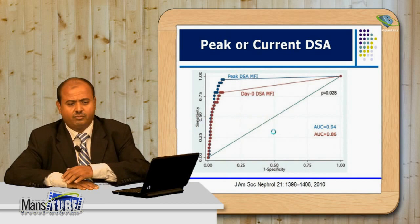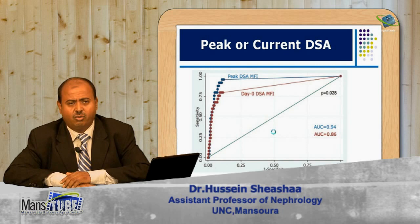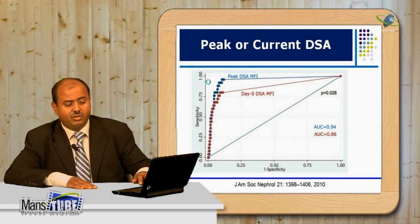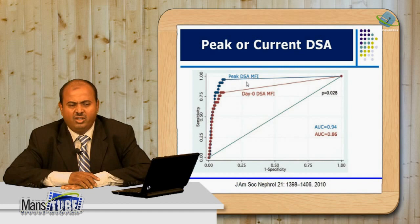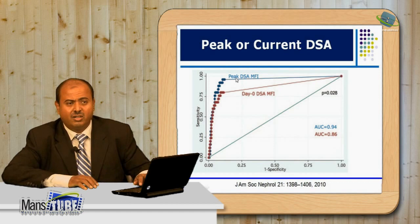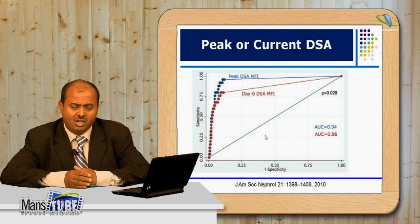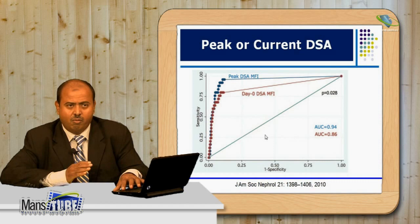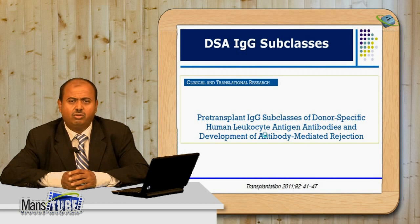An important question: if a patient had DSA at a certain point in the past, is that historical DSA important, or is only the current evaluation relevant? The historical or peak DSA is important because a broad area under the curve indicates the patient is at risk for antibody-mediated rejection. We should respect patient history and monitor DSA serially — peak or historical DSA matters as much as current antibodies.